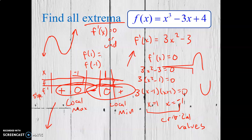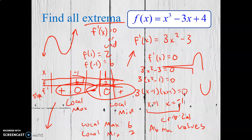Plugging in x = 1: 1 − 3 = −2, plus 4 gives 2. Plugging in x = −1: −1 + 3 = 2, plus 4 gives 6. So the local max is 6 and the local min is 2 — we just give the y values. The absolute max is none, and the absolute min is also none.